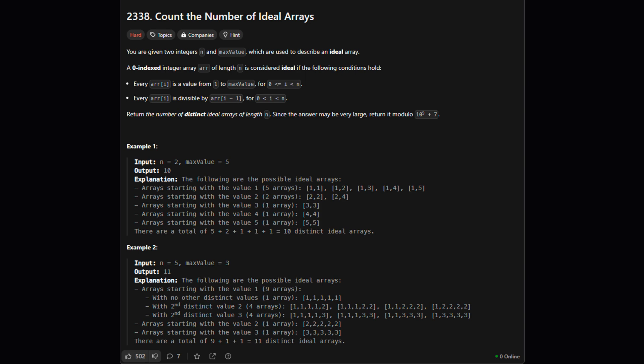So what's the goal here? We're given two numbers, n, which is the length of an array we need to imagine, and maxValue, which is the biggest number allowed inside that array. We need to count how many different arrays of length n we can make that follow two special rules. These are called ideal arrays. Rule 1: Every number in the array must be between 1 and maxValue inclusive. Simple enough. Rule 2, this is the important one: Every number in the array must be divisible by the number that comes before it. So the second number must be divisible by the first, the third by the second, and so on. Our job is to count how many distinct arrays satisfy both these rules, and since the number can get huge, we need to return the answer modulo 10^9 + 7.